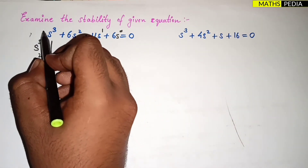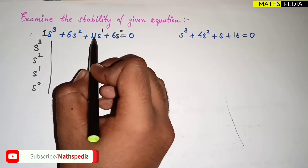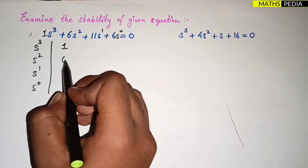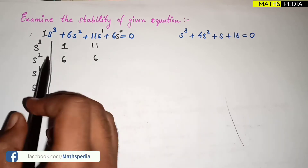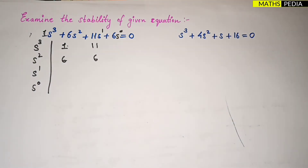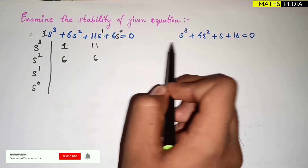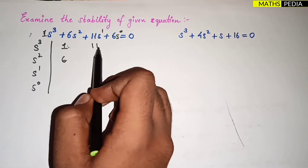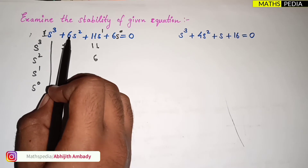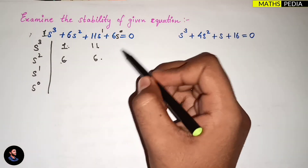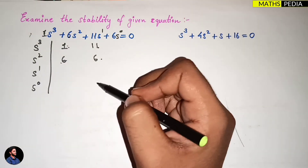Next, fill in the coefficients. For s³ + 6s² + 11s + 6, the coefficients are 1, 6, 11, 6. Column-wise: 1 and 11 go in the first row, 6 and 6 go in the second row. You can also remember it row-wise: first row gets 1 and 11, second row gets 6 and 6.